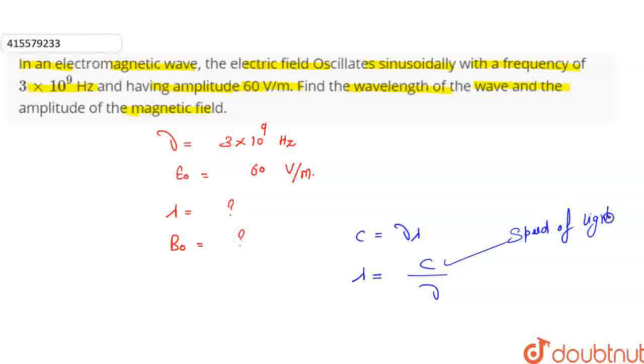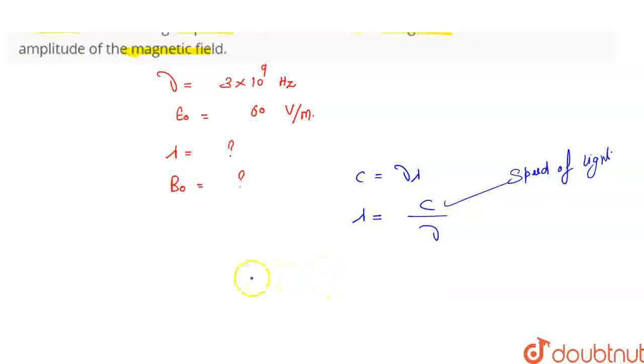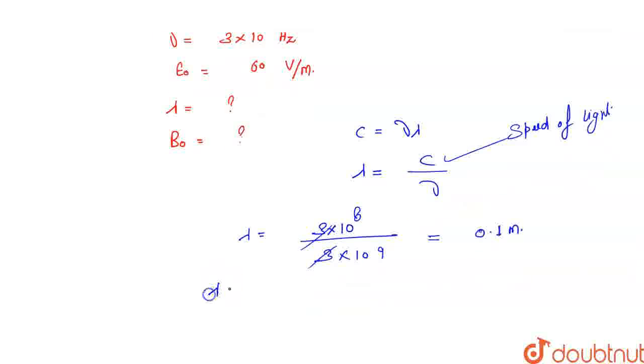Speed of light is 3×10⁸ m/s, and frequency ν is 3×10⁹ Hz. So λ = (3×10⁸)/(3×10⁹). The 3s cancel out, and 10⁸/10⁹ = 10⁻¹, so λ = 0.1 meter.